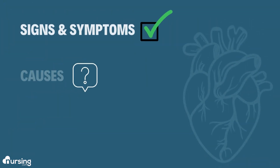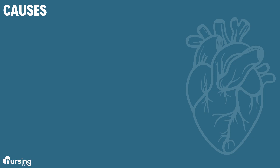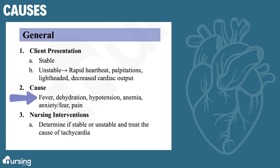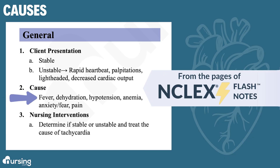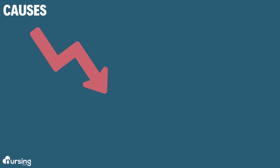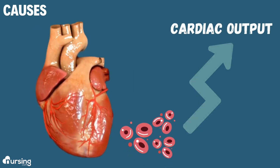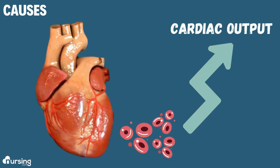After you determine the patient's signs and symptoms, you've got to find out the causes. If you can find out why they are tachycardic, it is so much easier to treat them. Some common causes include fever, which increases the metabolic demands. Dehydration, hypotension, and anemia decrease the blood volume in the circulatory system, so the heart will compensate by increasing rate to increase cardiac output.